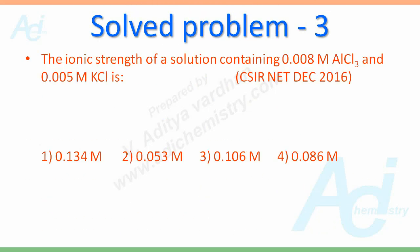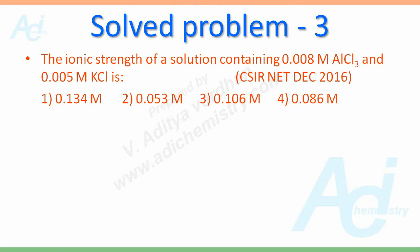Now the third example, here we are dealing with a solution containing 0.008 molar AlCl3 and 0.005 molar KCl. So we have to find out the ionic strength of this mixed solution. Options are also given, we have to choose the correct one. So let us start solving this problem.